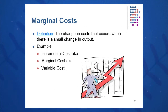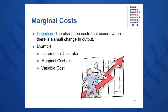Marginal cost — you may hear that terminology used by accountants, financial analysts, and economists. We're talking about the cost of one more unit, a small change in output, sometimes called incremental cost, marginal cost, or variable cost. These terms are often used interchangeably, so don't be confused by them.